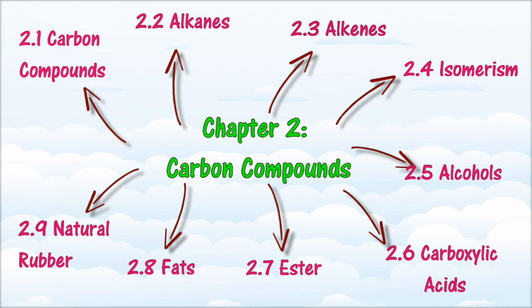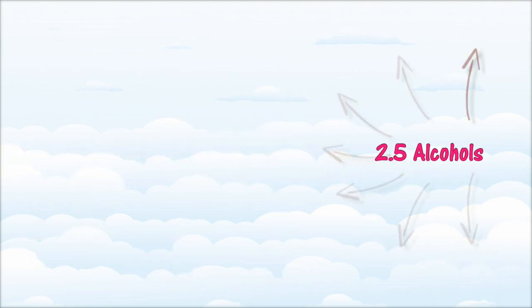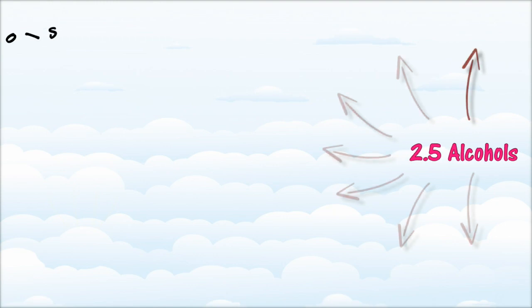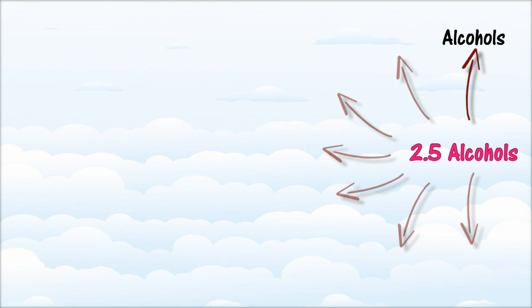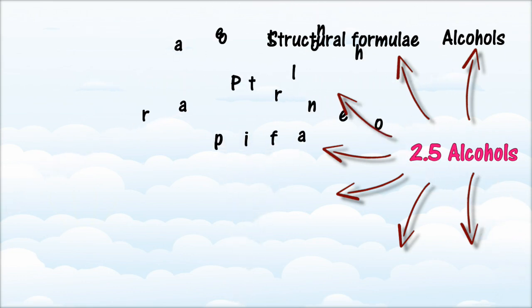In Section 2.5, we will learn about Alcohols. At the end of this section, you should be able to: state the general formula of alcohols; identify the functional group of alcohols; list the names and the molecular formulae of the first 4 alcohols; draw structural formulae for isomers of propanol and butanol; name isomers of propanol and butanol using IUPAC nomenclature; and describe the industrial production of ethanol.